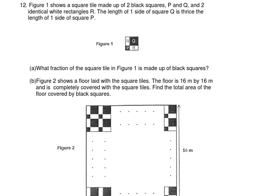Figure one shows a square tau made of two black squares P and Q, and two identical white rectangles R and R. The length of one side of the square tau is three times the length of one side of square P. So P is one unit, Q is three units, and the entire square tau is four units by four units.